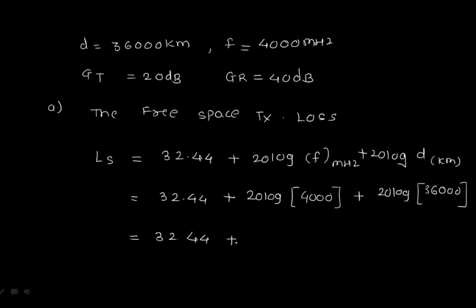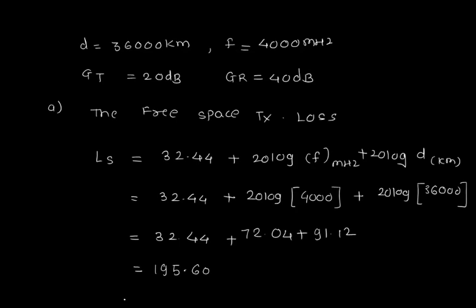Calculating: 20 log(4000) = 72.04, and 20 log(36,000) = 91.12. Adding all terms: 32.44 plus 72.04 plus 91.12 = 195.60. Therefore, Ls = 195.60 dB. The path loss unit is dB, so Ls in dB equals 195.60 dB.